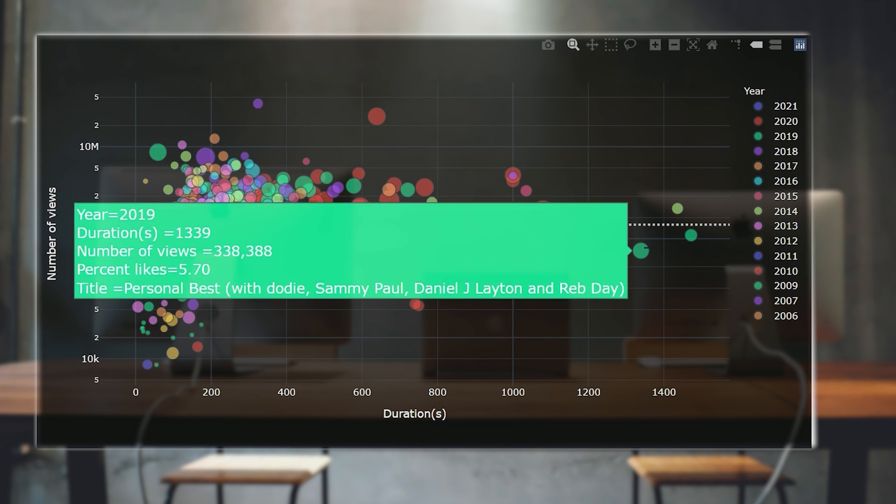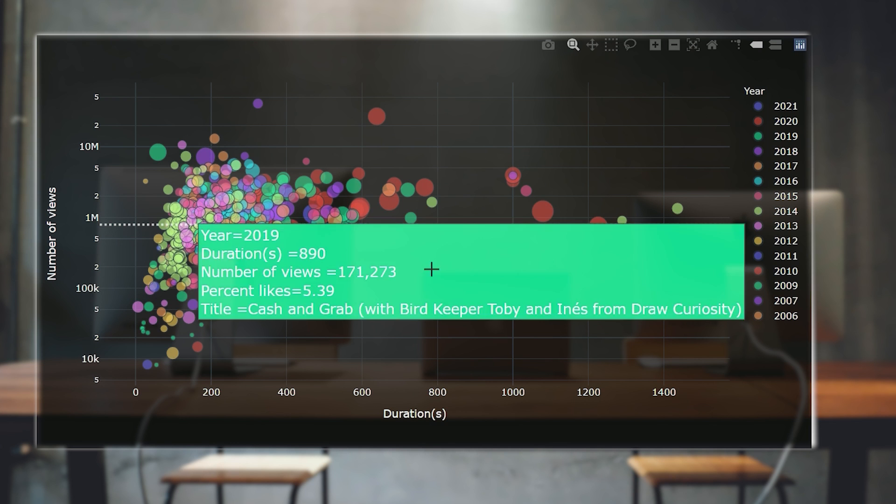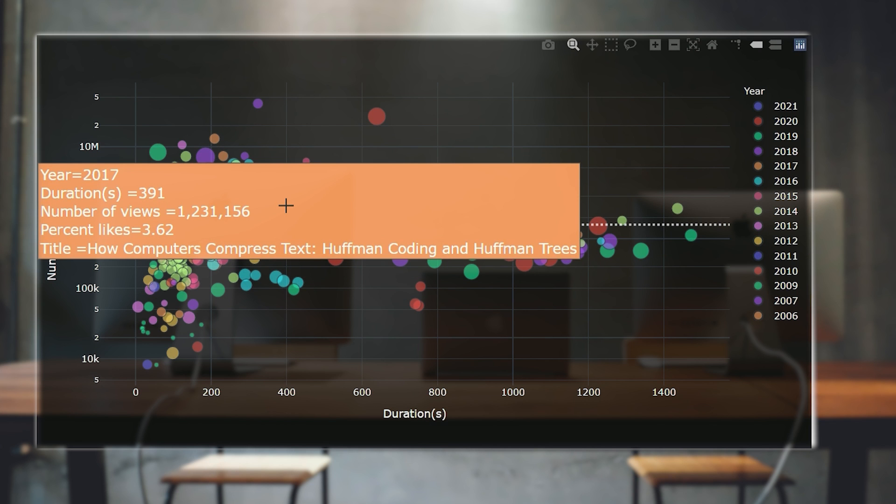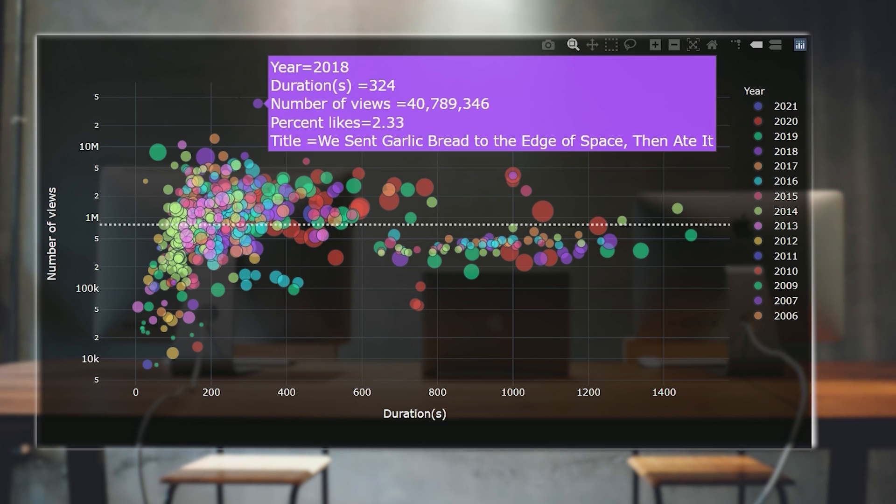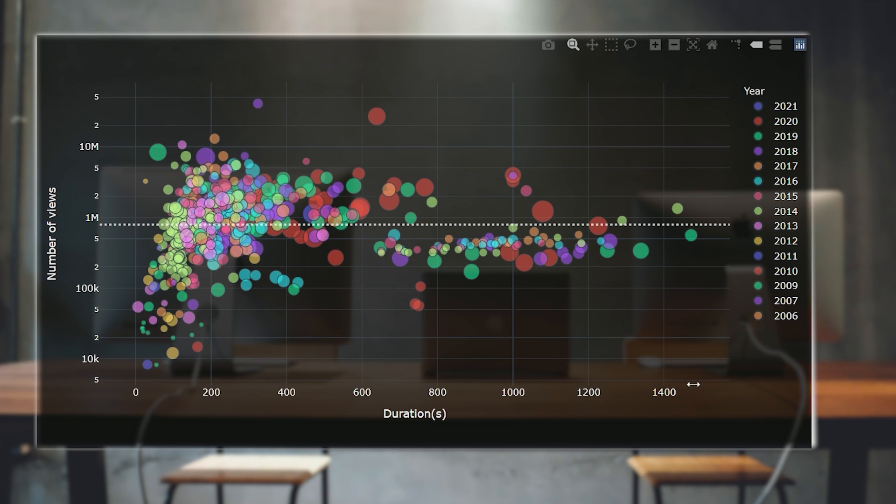There are two clusters here that I think are interesting. This one of longer videos that don't have so many views, and then this cluster here of shorter videos that are doing very well. The most viewed video is this one with 40.7 million views, and the lowest number of views goes to the fire jugglers of York with 8,233 views since 2009.